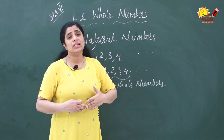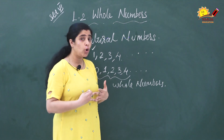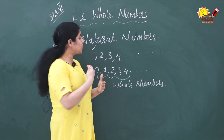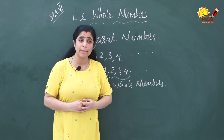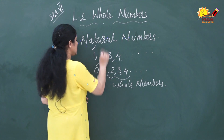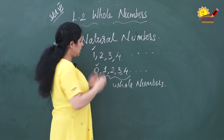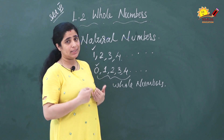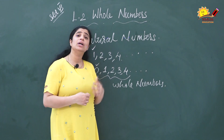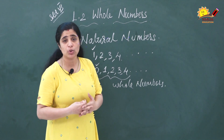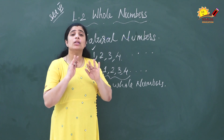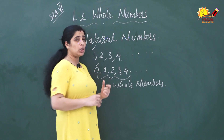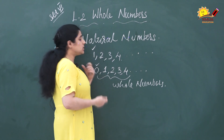Now, which one is the smallest whole number? 0 is the smallest whole number. We already discussed that the biggest natural number we can't tell — the same way, the biggest whole number is also very difficult to find. We can't tell the biggest whole number. The smallest, or least, whole number is 0.